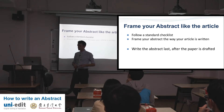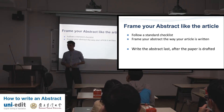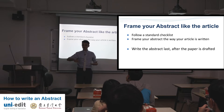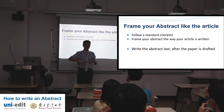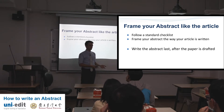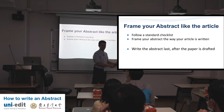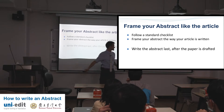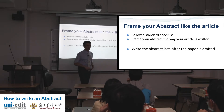Follow a standard checklist. Frame your abstract the way that your article is written. Generally, your article is introduction, methodology, results, discussion, and conclusion — that's a flow, that's a story. There's a reason you don't start with your methodology: because you need to know why, and that's what your introduction and literature review say. So your abstract should be written similarly. Write the abstract last after your paper is drafted.